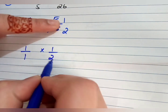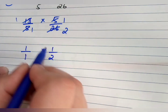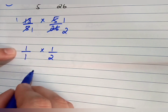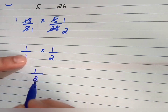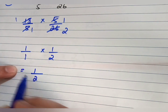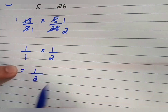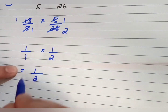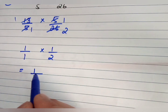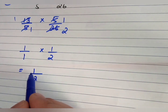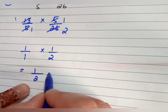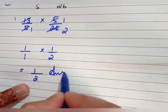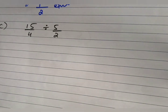What's left is 1 by 1 and 1 by 2. Multiply the numerators: 1 times 1 equals 1; denominators: 2 times 1 equals 2. Now look at your fraction — 1 over 2 is a proper fraction because the numerator is smaller than the denominator. So that is the answer to Part B.